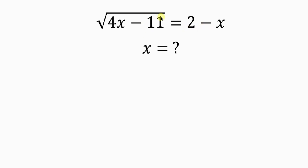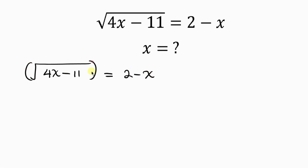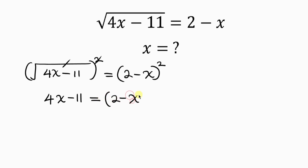Our first step will be to get rid of the square root, and we do that by taking the square of both sides. So on the left-hand side we have the square root of 4x minus 11, equal to on the right-hand side 2 minus x. We take the square of both sides, so the square cancels the square root, leaving behind 4x minus 11. This is equal to, on the right, 2 minus x, all squared.